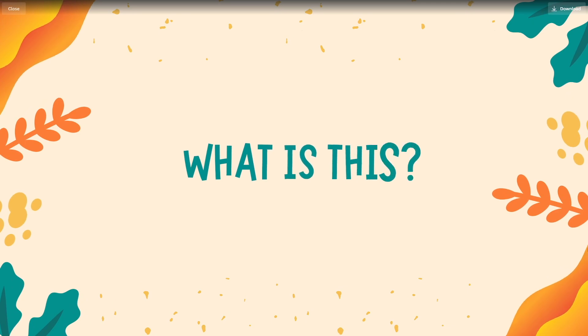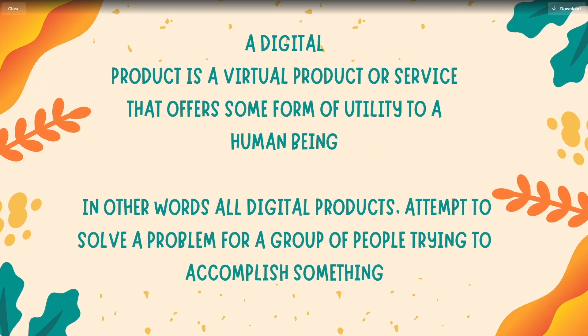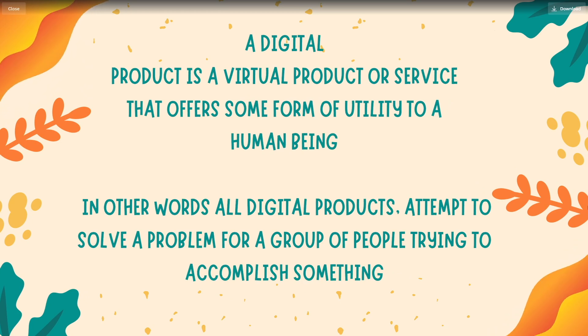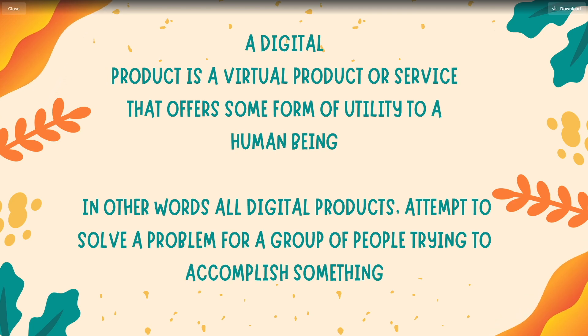First of all, what is a digital product? A digital product is a virtual product or service that offers some form of utility to a human being. In other words, all digital products attempt to solve a certain problem for a group of people trying to accomplish something. So let's say that someone has a problem — you can just jump in to solve that problem for them, or get close to it.